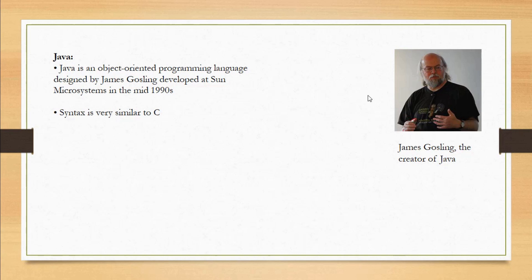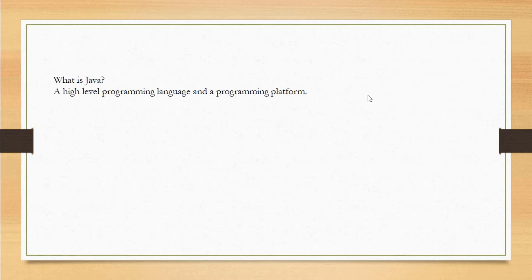Java is very similar to C programming language. Java is a high-level programming language and a programming platform as well. It is also very similar to an object-oriented programming language.